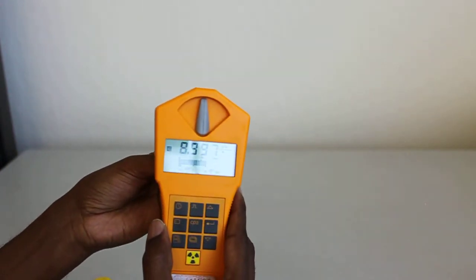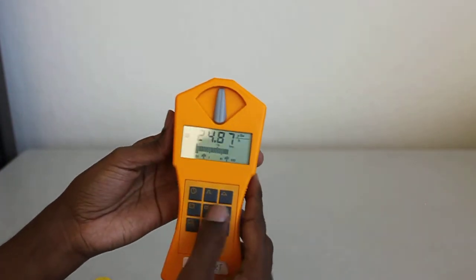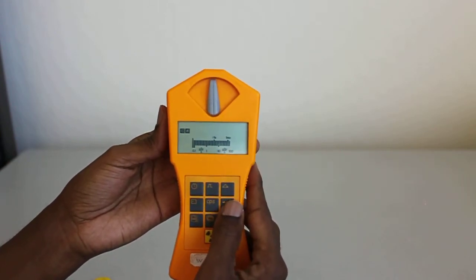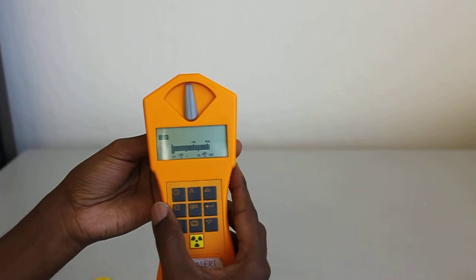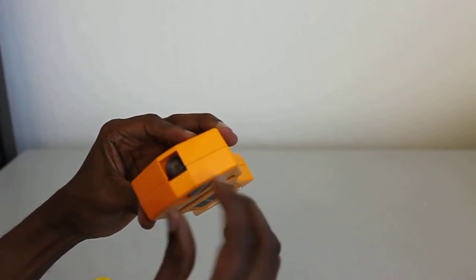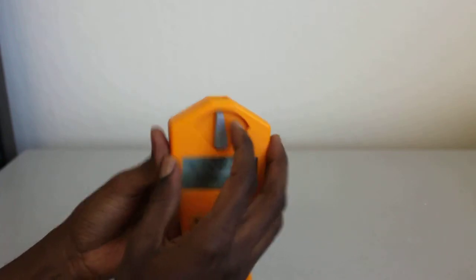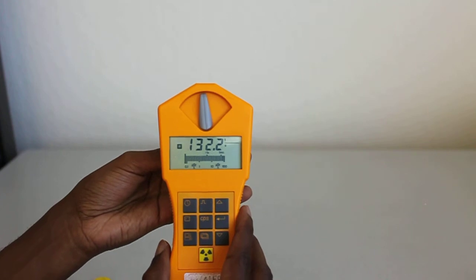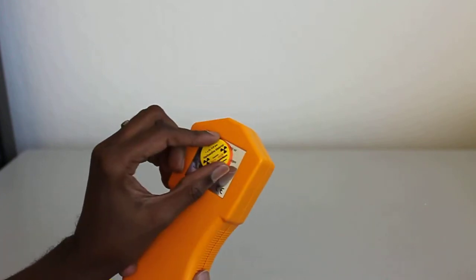Let's hold this over here. We're seeing in microsieverts per hour, but I want counts per second, so let's change that reading. Its sensor is right over here. You can actually see the top of the tube over there. I'm just going to hold it across here, across the back, like that.